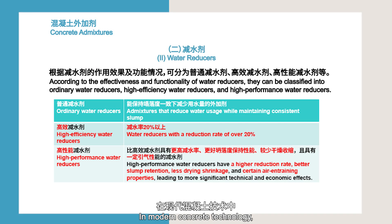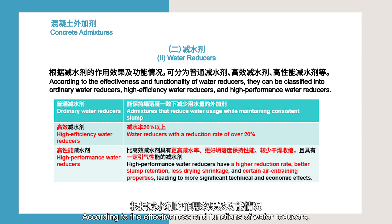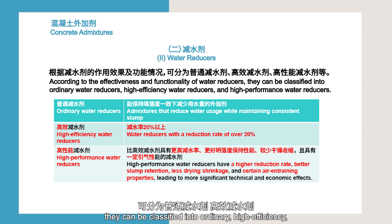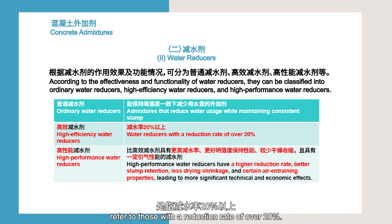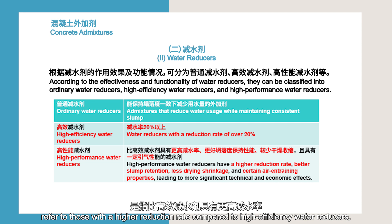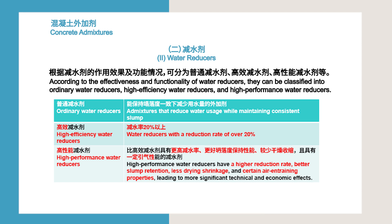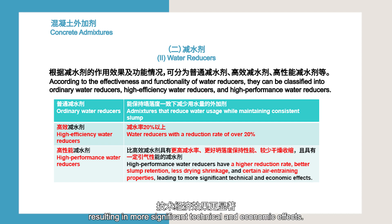In modern concrete technology, water reducers are currently the most widely used. According to their effectiveness and functions, water reducers can be classified into ordinary, high-efficiency, and high-performance water reducers. High-performance water reducers have a higher reduction rate compared to high-efficiency water reducers, better slump retention performance, less drying shrinkage, and certain air-entraining properties, resulting in more significant technical and economic effects. Of course, they are also relatively expensive.